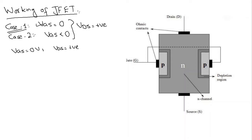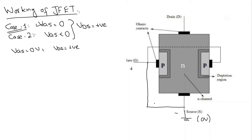For both cases we will have VDS, the voltage between drain and source, as some positive value. In this video I am going to discuss case number one: VGS equals zero volts and VDS equals some positive value. To get VGS equal to zero volts, the gate and source must be at the same potential — that is, the potential difference between gate and source equals zero. So I am going to connect the gate and source terminals together and add ground here, since ground is at zero volts.